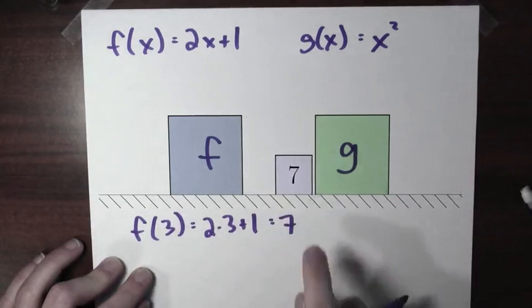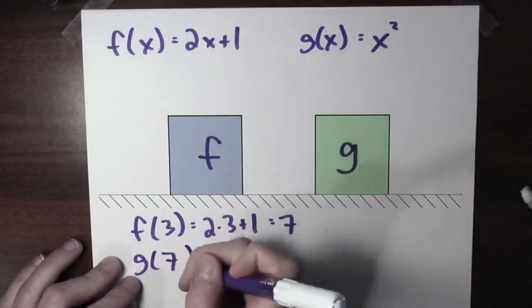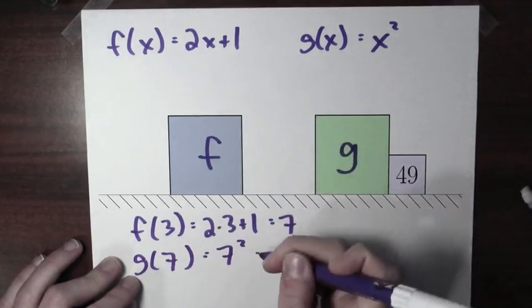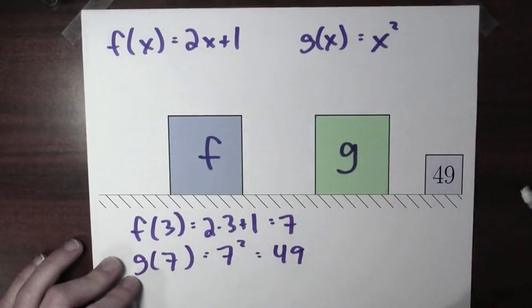Now I'm going to take the output to f and put it in to the input of g. So g of 7, well that's going to be 7 squared, and that'll be 49. So here now, coming out of the function g, is the number 49.